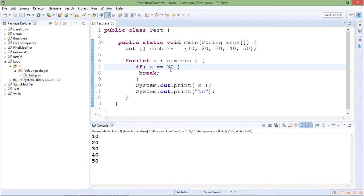So in this case, when x value becomes 30, the break keyword will break the loop. So further loop is not executed. Output will be only 10 and 20.